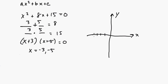This parabola is going to look something like this. I'm sketching it, I don't know exactly, but it crosses at -3 and -5.